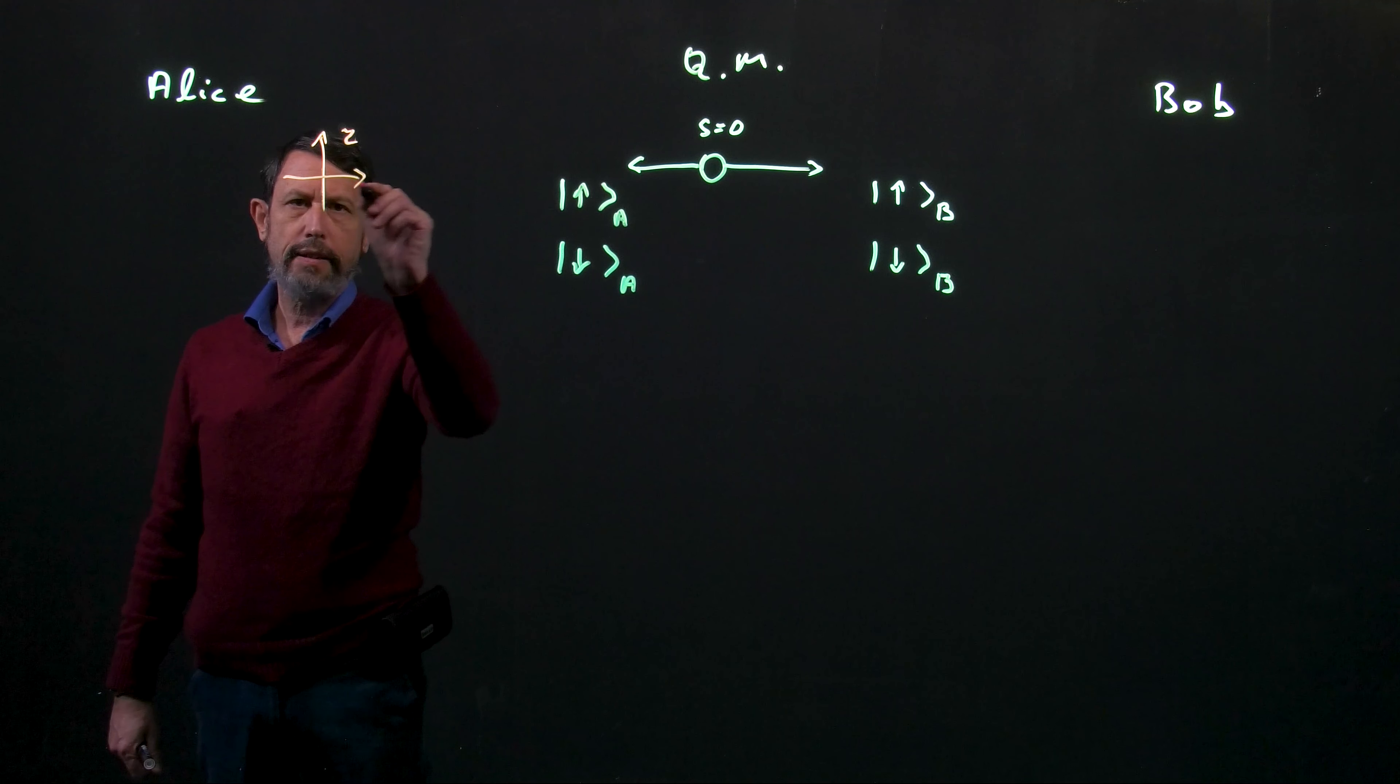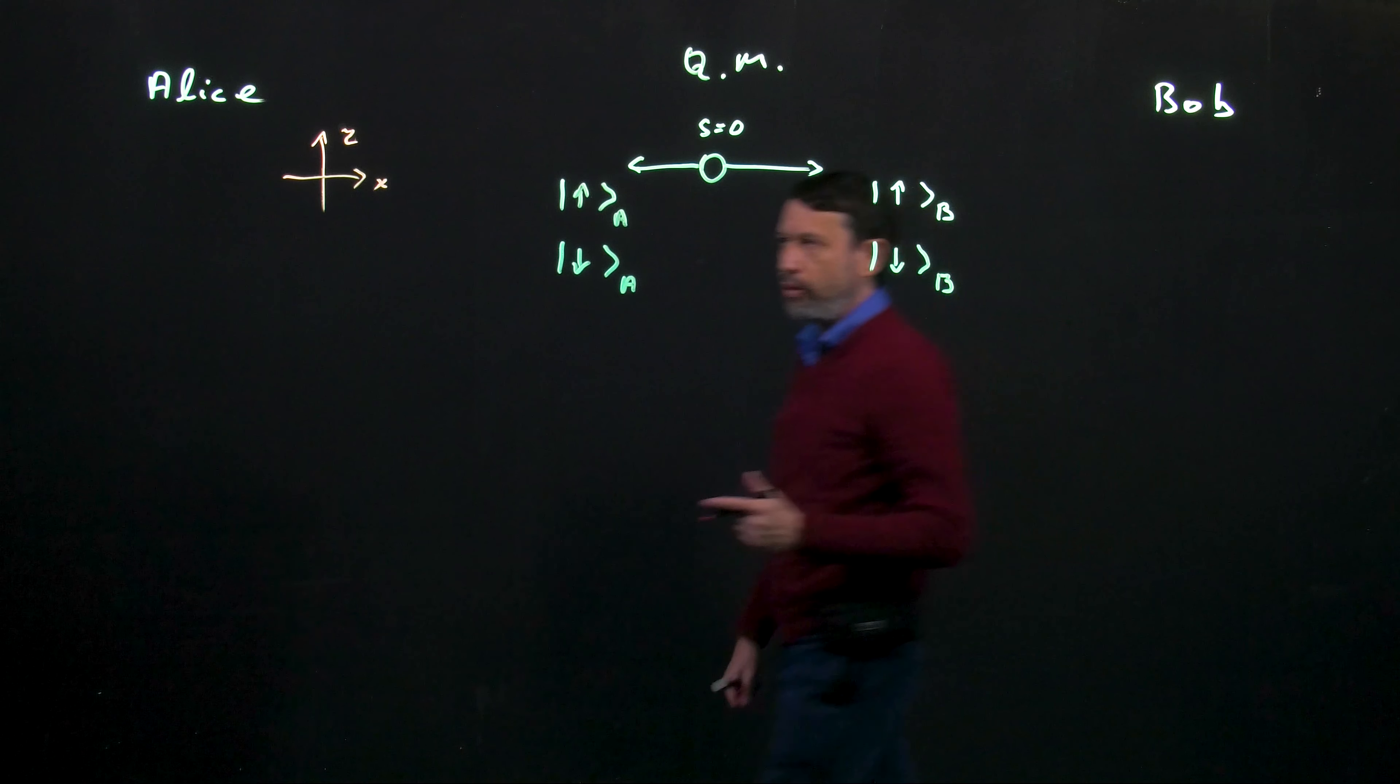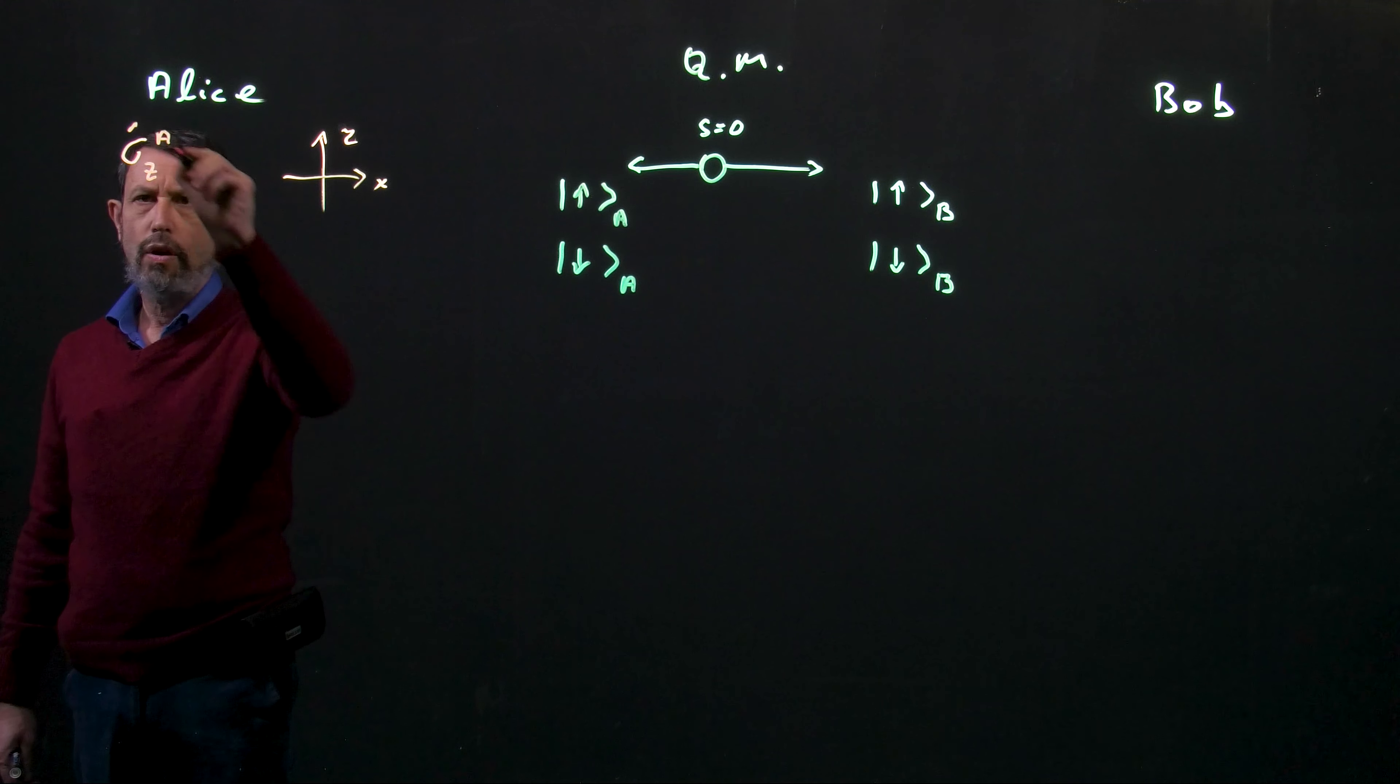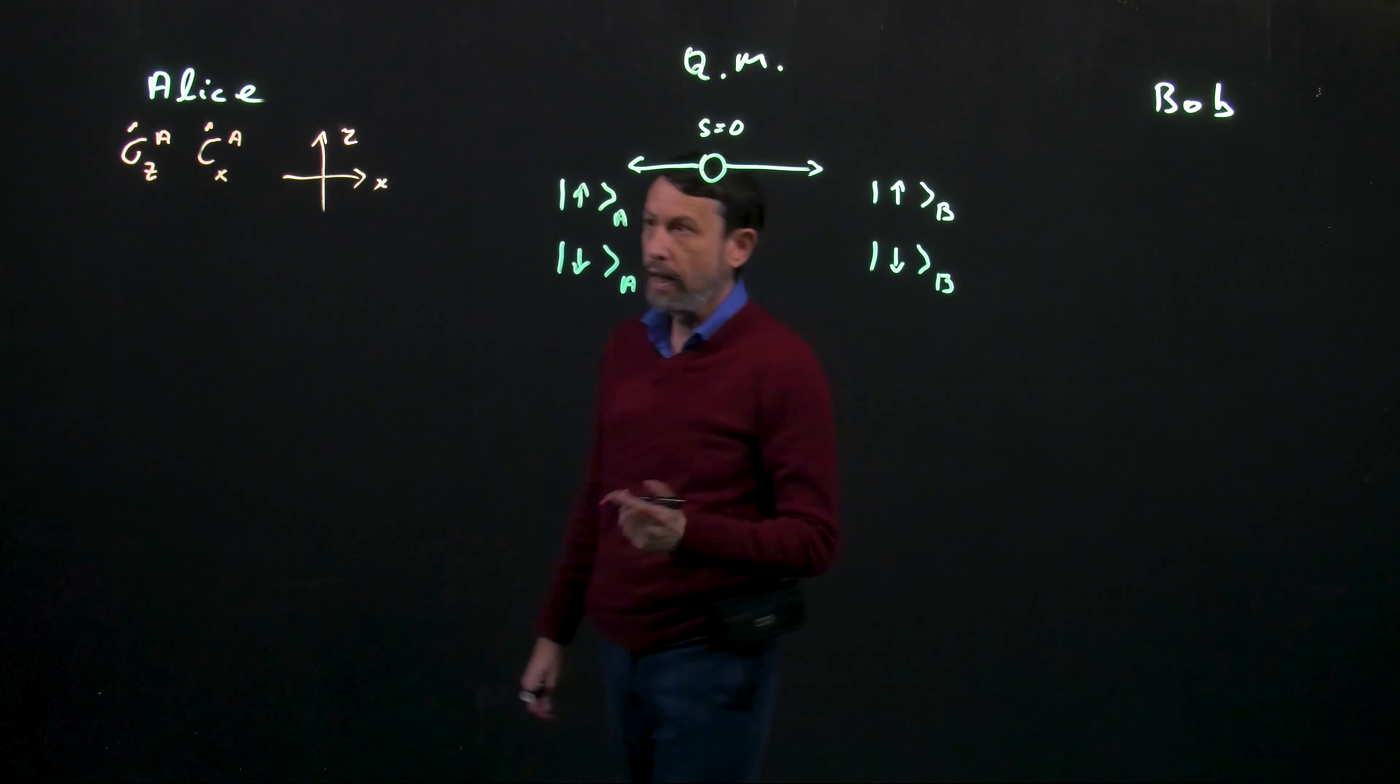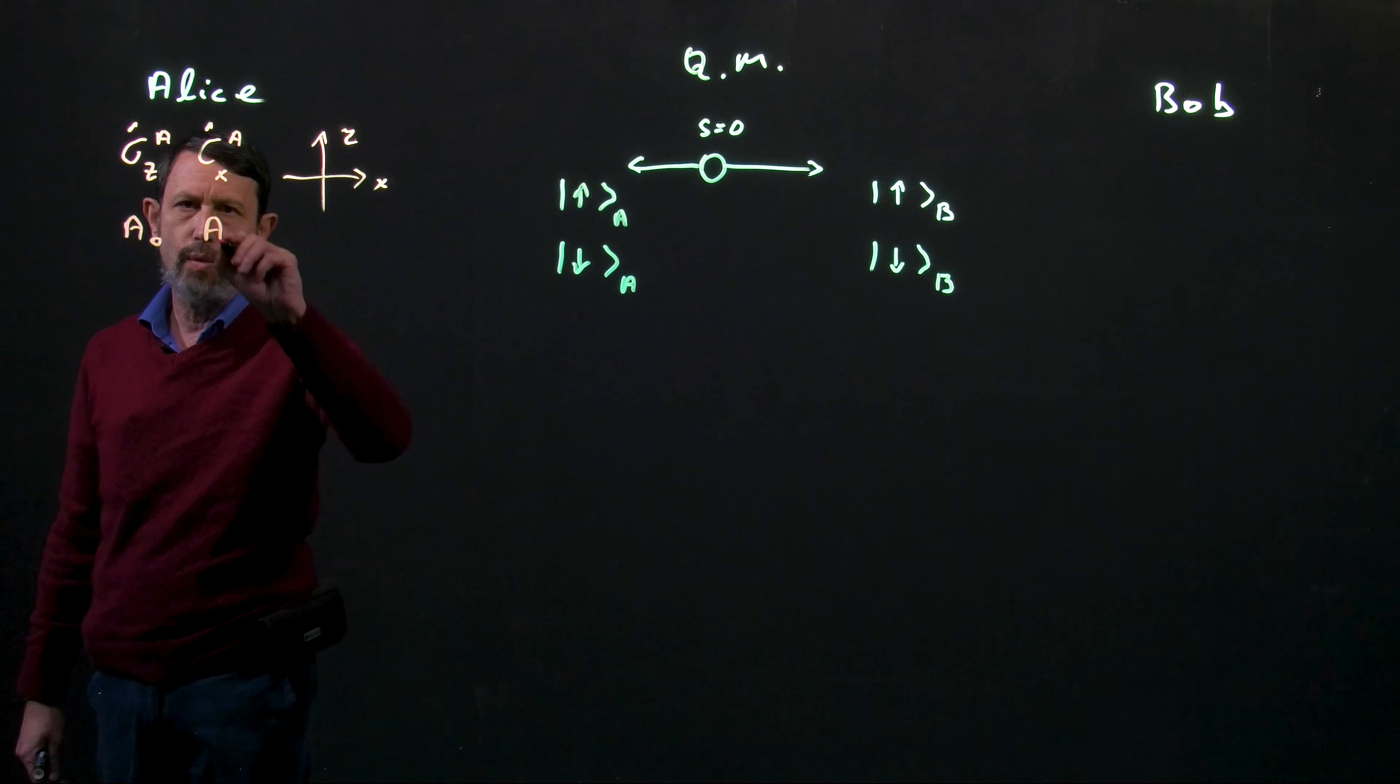Okay so for Alice, let's assume that she measures either in the z axis or in the x axis. And since any measurement in quantum mechanics as you already know is an operator, she can measure the operator sigma z or sigma x. And both of them I denote with an a just to remind me that that's Alice measurement. That corresponds to the two directions that we have mentioned in the previous clip a0 and a1.